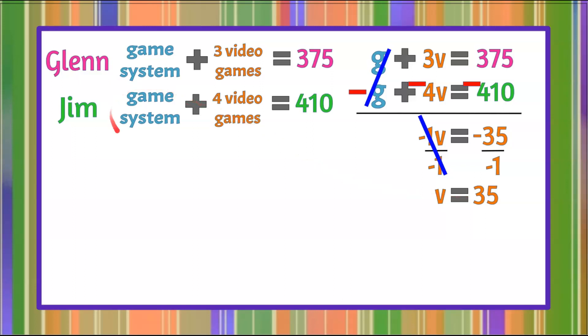But remember, we want to know the cost of a game system. So let's bring down either equation. I'm going to start with the first one: g plus 3 times the cost of a video game equals 375. Well, now we know that v has a cost of $35. So let's rewrite this: g plus 3 times 35. We know that v is equal to 35, and that equals 375.